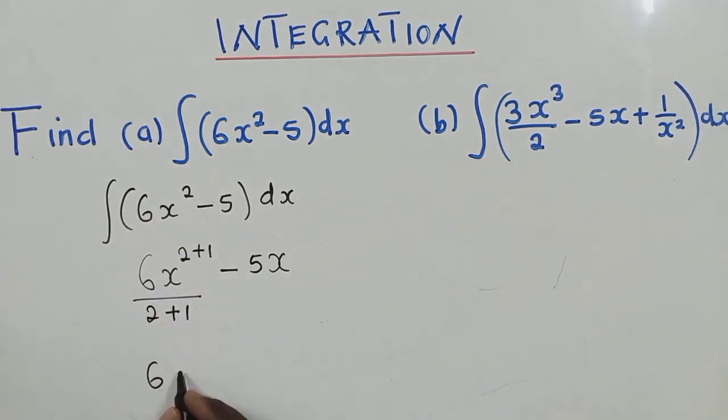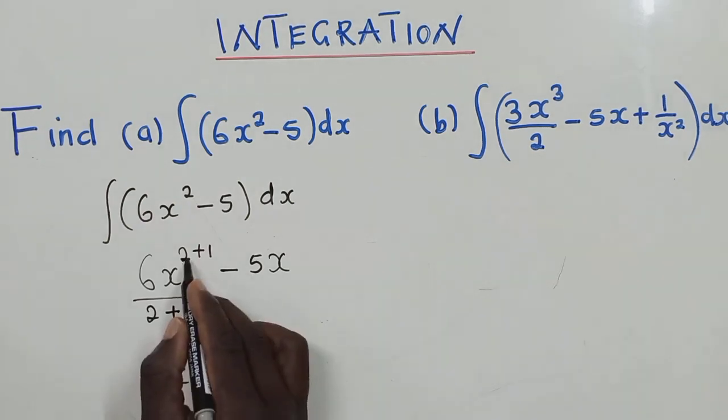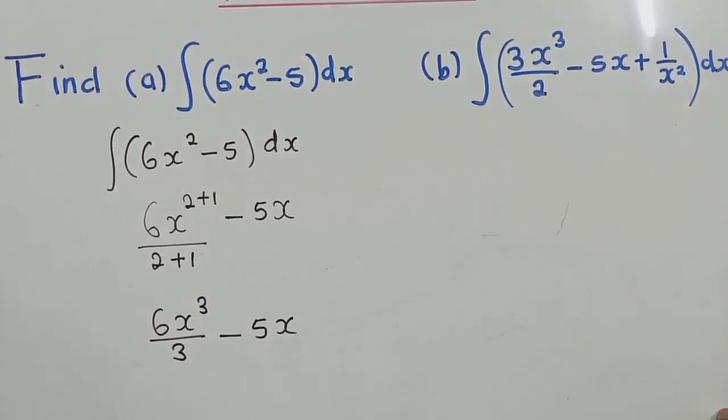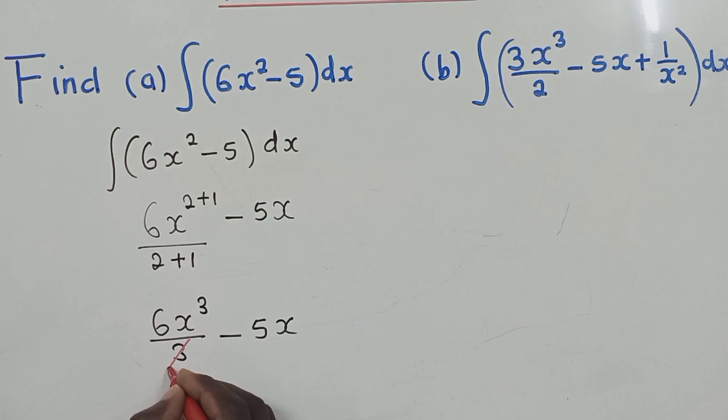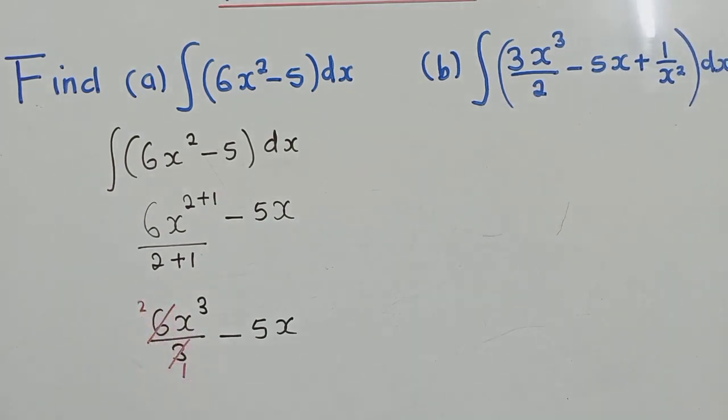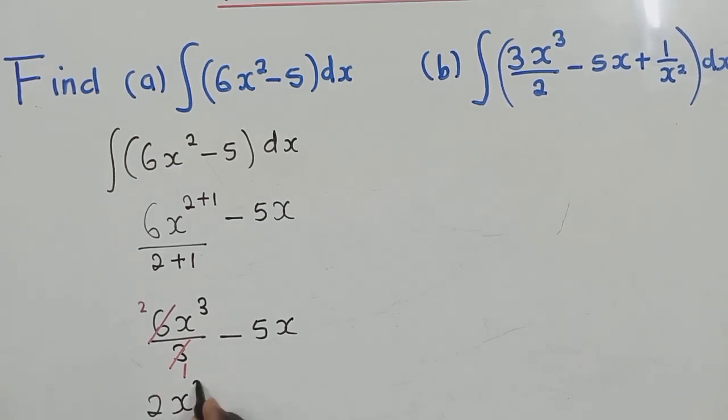So here, we have six X. When we say two plus one, what are we getting? It's three. Here, it's also three. Minus five X. So now, here, we have to divide. We know that three into three is one, into six is two. So we have 2X power three minus 5X.